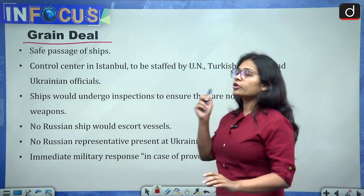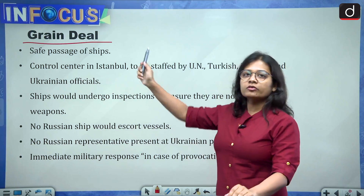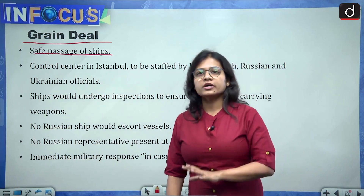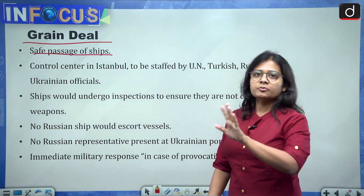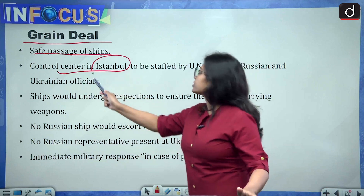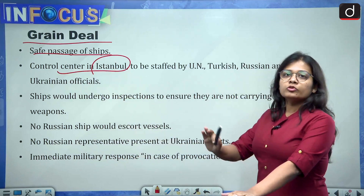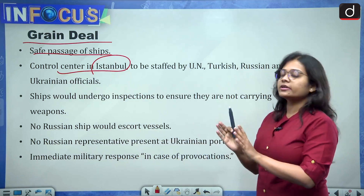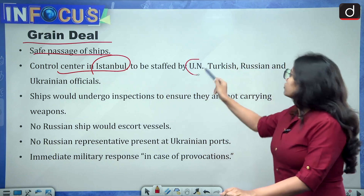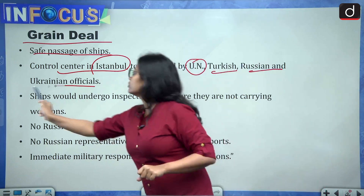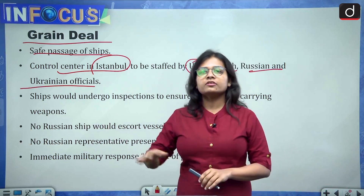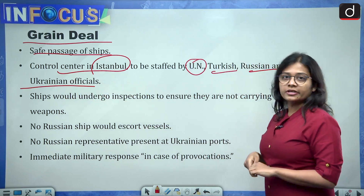Now let's see what this grain deal is. Because of this deal, there will be a safe passage for ships from both countries. Both countries' ships can move easily and safely, and the control center will be established in Istanbul. The control center will not be under either country individually — it will be staffed by United Nations, Turkey, Russia and Ukrainian officials.